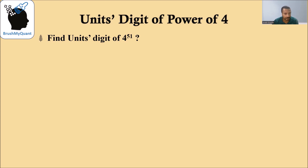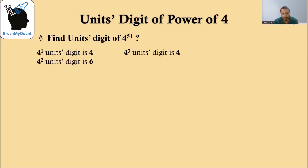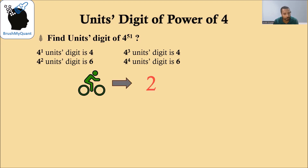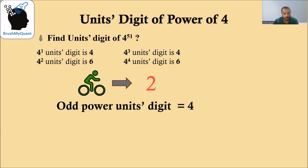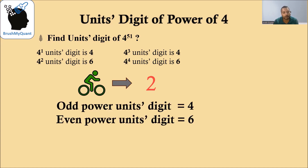The units digit of 4 raised to 1 is 4, the units digit of 4 squared is 6, and again it repeats: units digit of 4 cubed is 4, and units digit of 4 raised to 4 is 6. That means the cycle of the units digit of powers of 4 is equal to 2. For any odd power of 4, the units digit will be 4, and for any even power of 4, the units digit will be 6.